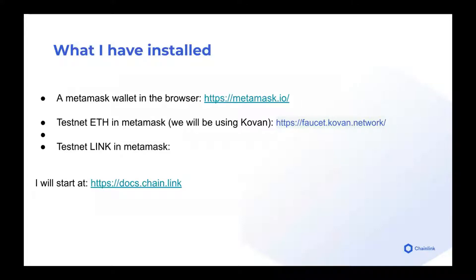A little bit of what I have installed on my computer right now: I have a MetaMask extension installed, testnet ETH in my MetaMask, and we're going to be deploying things to the Kovan network, and testnet LINK in MetaMask. You can always find the faucet for testnet LINK in the docs. So let's go ahead and move into the docs and get started with the demo.